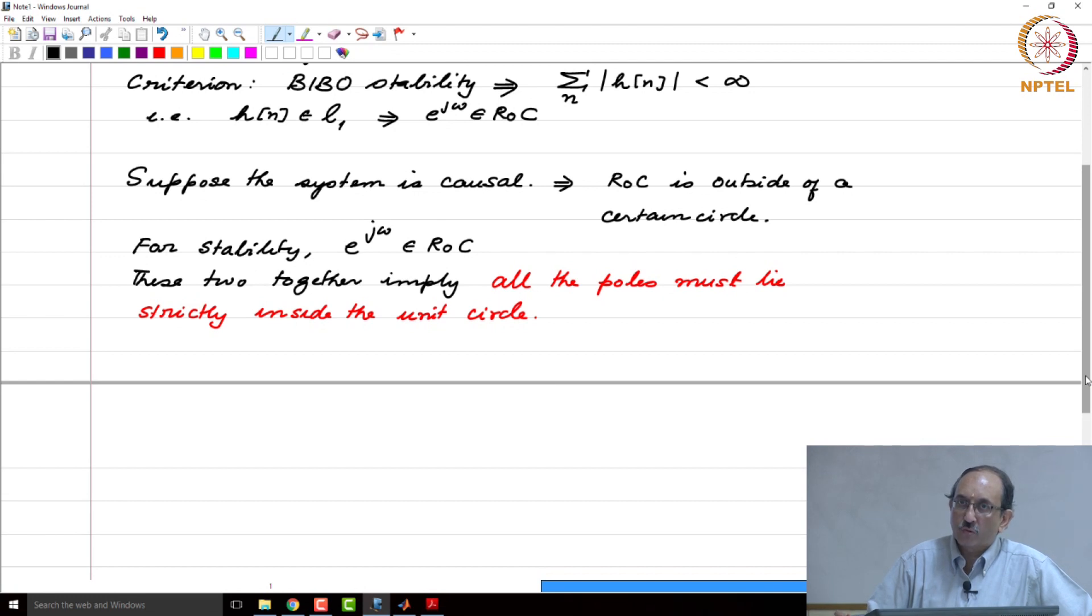If you combine those two facts together, namely ROC is to the right of a certain vertical line and the ROC must contain the j omega axis for stability, then you infer that all poles must lie strictly in the left half plane.